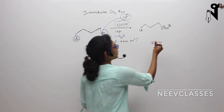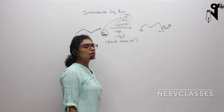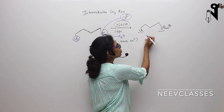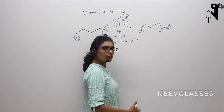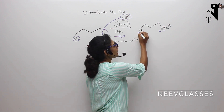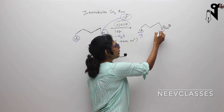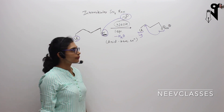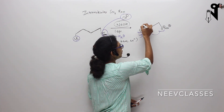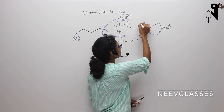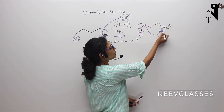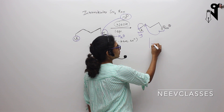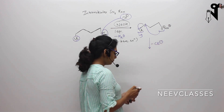Now this O- is a better nucleophile — definitely a better nucleophile than chlorine. We have a chlorine which is a leaving group over here and we have O- as a nucleophile over here. This O- can attack on this carbon through an SN2 mechanism. If that will happen, the bond between this carbon and the chlorine will break and the bond between oxygen and carbon will form. So in result, the product formed would be...